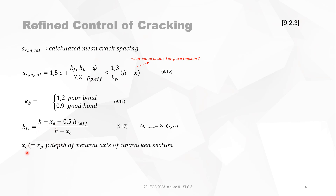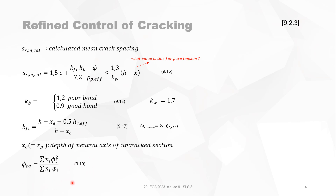XE in this formula is the same as XG and is the depth of the neutral axis of an uncracked section. KW is 1.7, and the diameter V is just the diameter of the rebar. If you use different sizes of rebars in one layer, then you should use the equivalent diameter, given by formula 9.19.